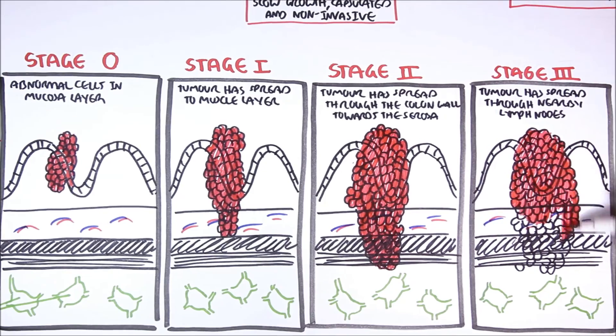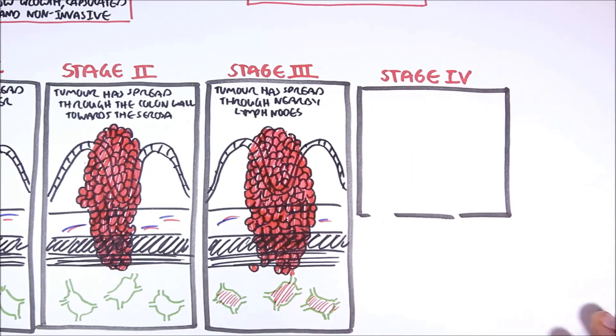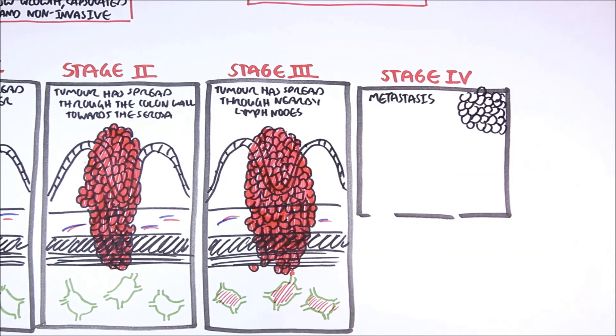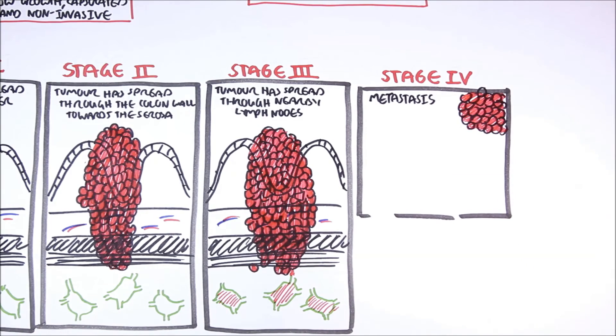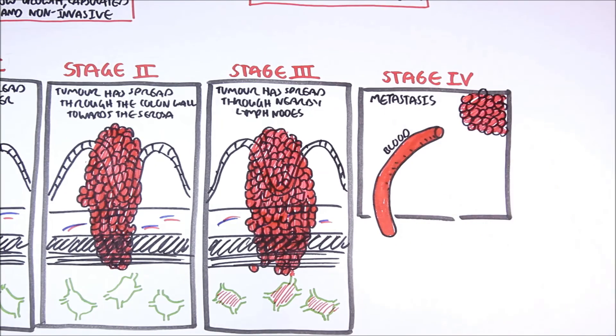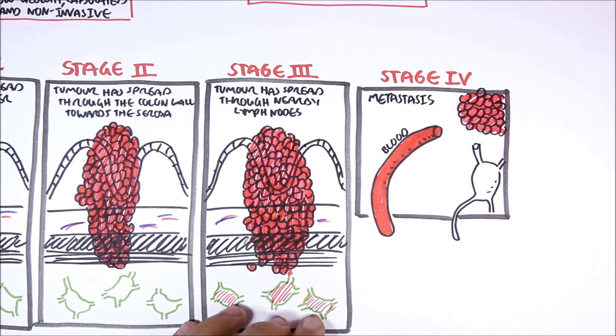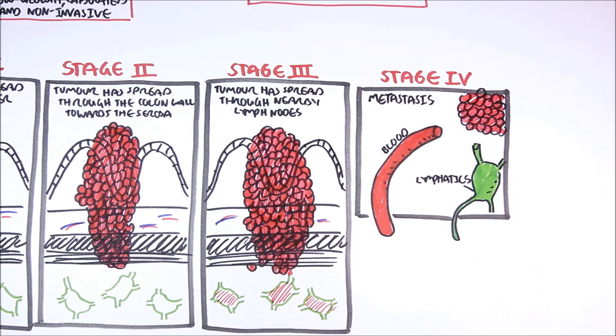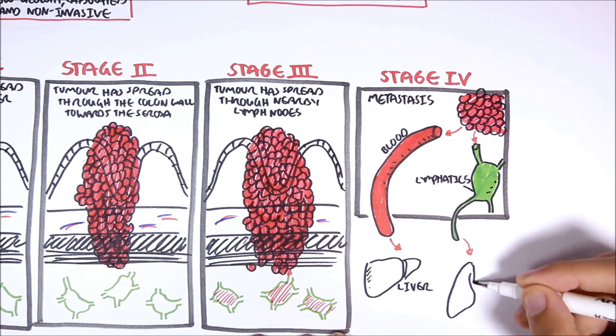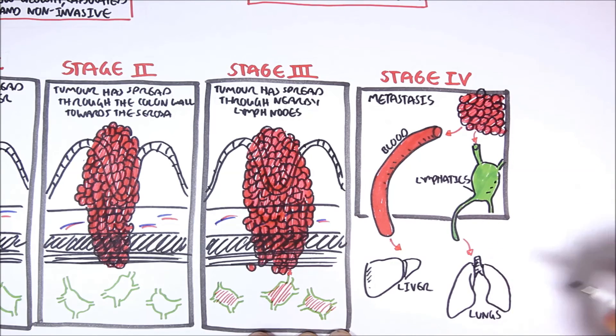And then we have stage 4, which is the terminal stage, called metastasis. This is where the cancer cells have metastasized and have begun invading other tissues and organs by traveling through the blood and lymphatics. The cancer cells can invade other organs, such as the liver, lungs, and bone.